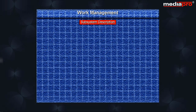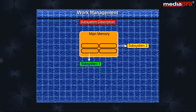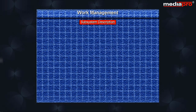Every subsystem has a subsystem description. The subsystem description defines how many jobs can be run on that subsystem, where and how the jobs are to be run, and what resources are to be used to run the job. The subsystem description also identifies the amount of main storage that will be available for jobs running in this subsystem, and it defines various sources of work for the subsystem, such as auto-start jobs, workstations, job queues, and communications.